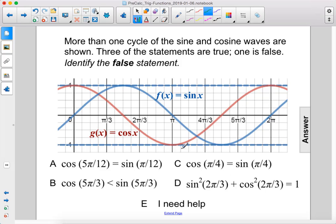More than one cycle of the sine and cosine waves are shown. Three of the statements are true, one is false. Identify the false statement.